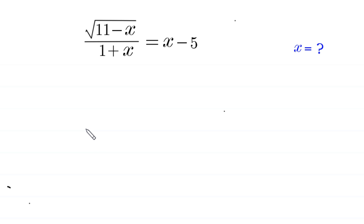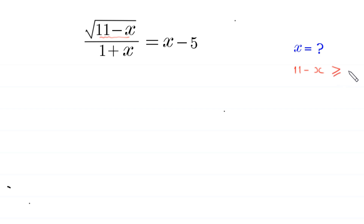Welcome to how to solve this algebra equation: the square root of (11 minus x) over (1 plus x) is equal to x minus 5. We need to find all possible values of x. Since 11 minus x is under a square root, it must be greater than or equal to 0, which means x must be less than or equal to 11. This is the domain of the equation, which we will use to check solutions.